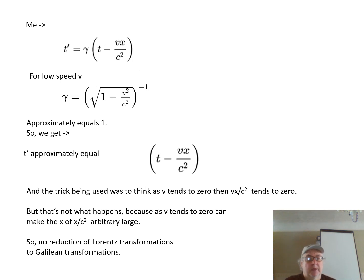So starting from the Lorentz transformation for time, you take v as a low speed and what is the gamma factor? It approximately then equals one. And then that equation for the Lorentz transformation for time approximately equals that equation t minus vx divided by c squared. And the trick being used was to think that v tends to zero when vx divided by c squared tends to zero.